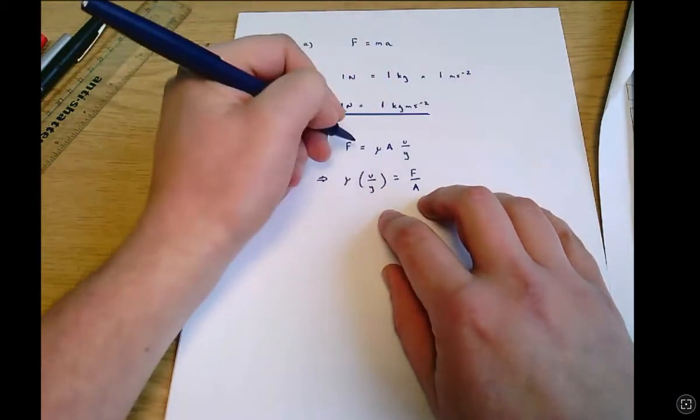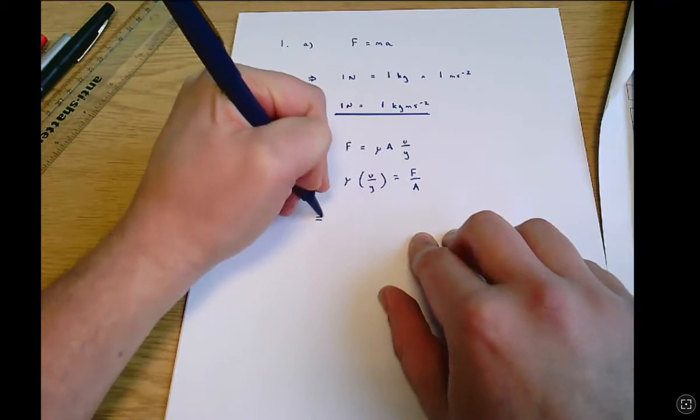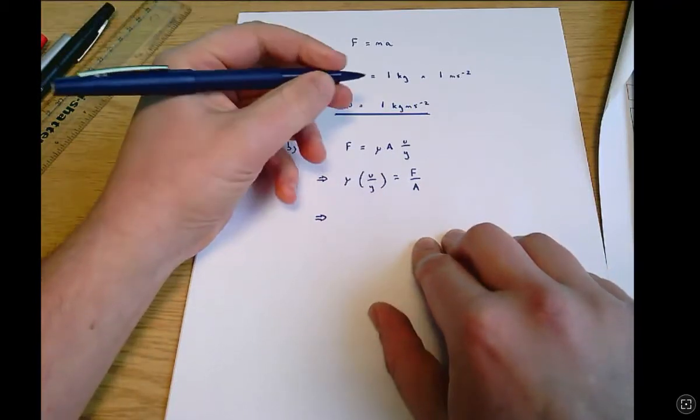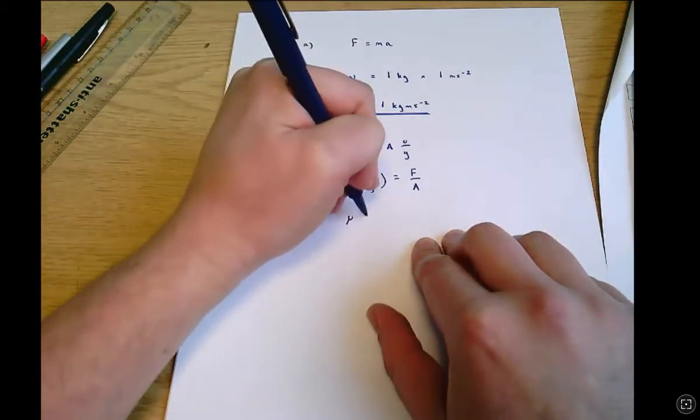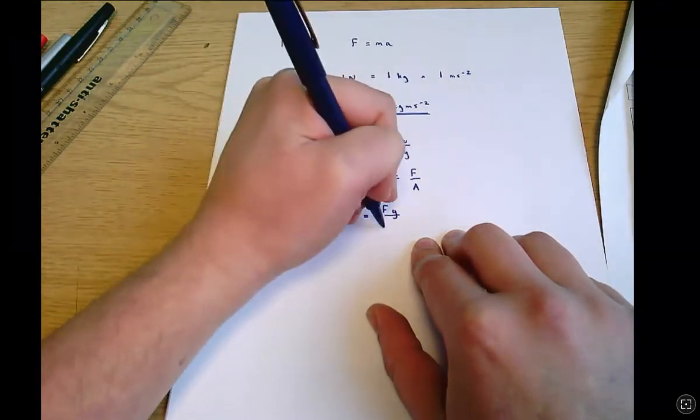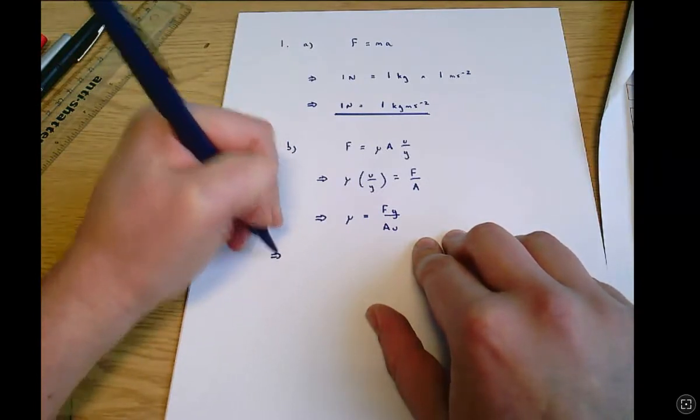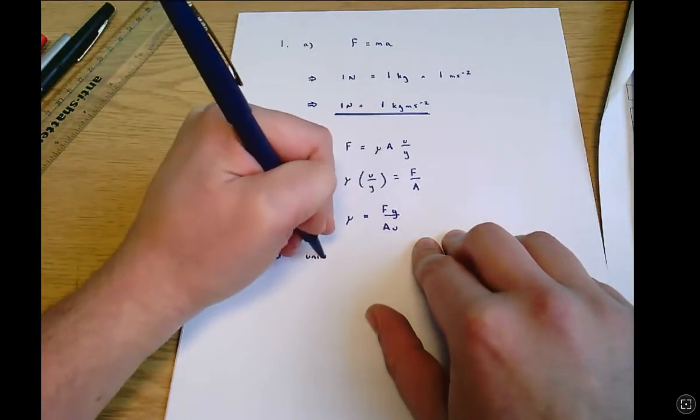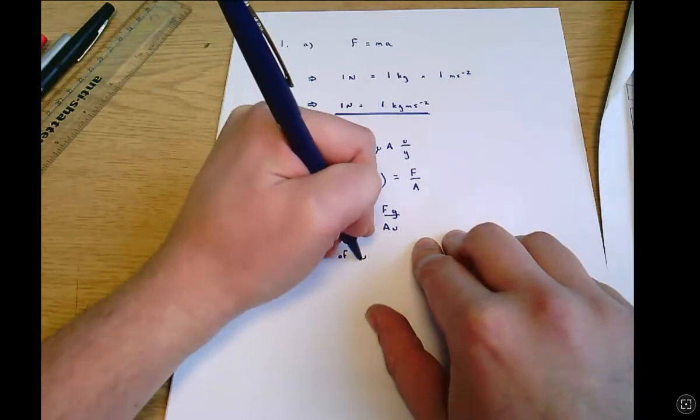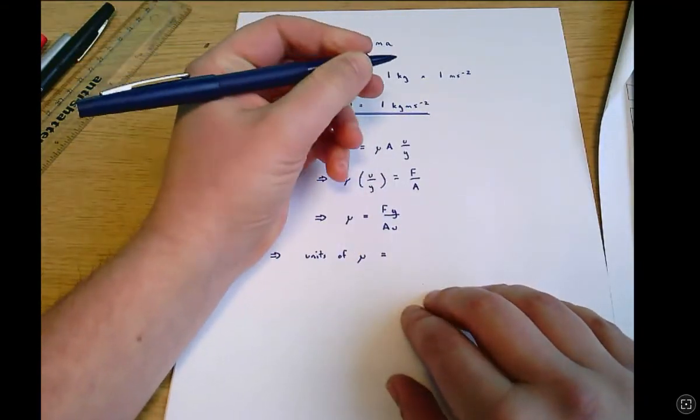So I've switched the sides around and then divided both sides by a and now I can multiply by y and divide by u and I'll get mu equals f y over a u. And that means then that the units of mu the viscosity are the units of f y over a u.